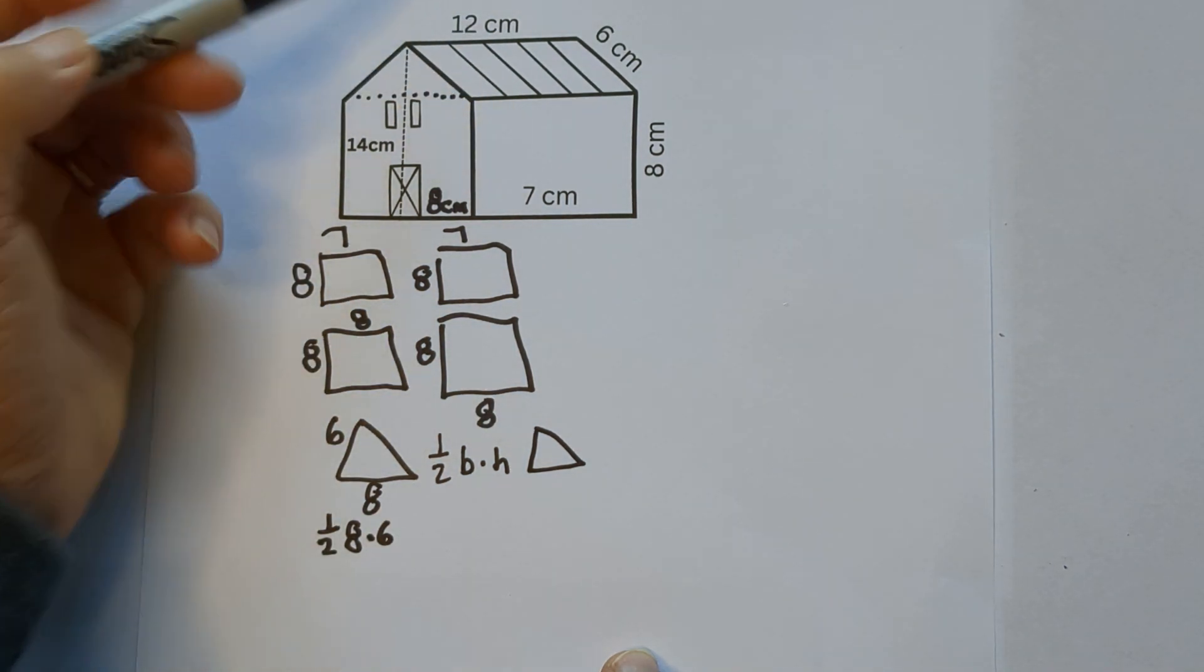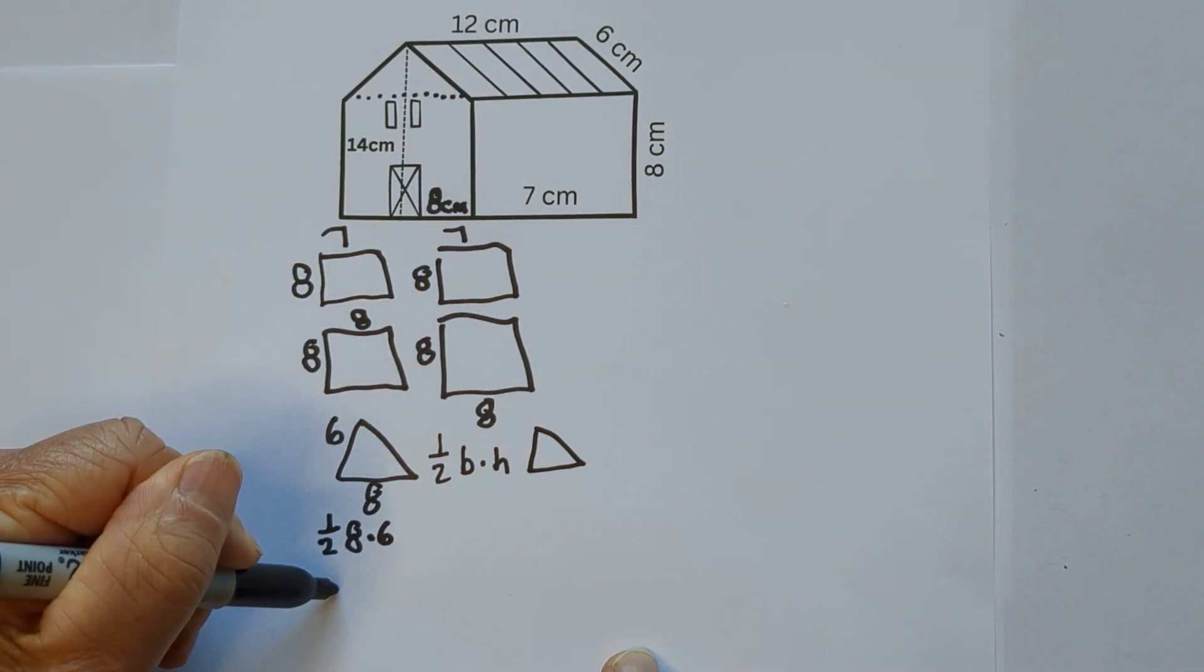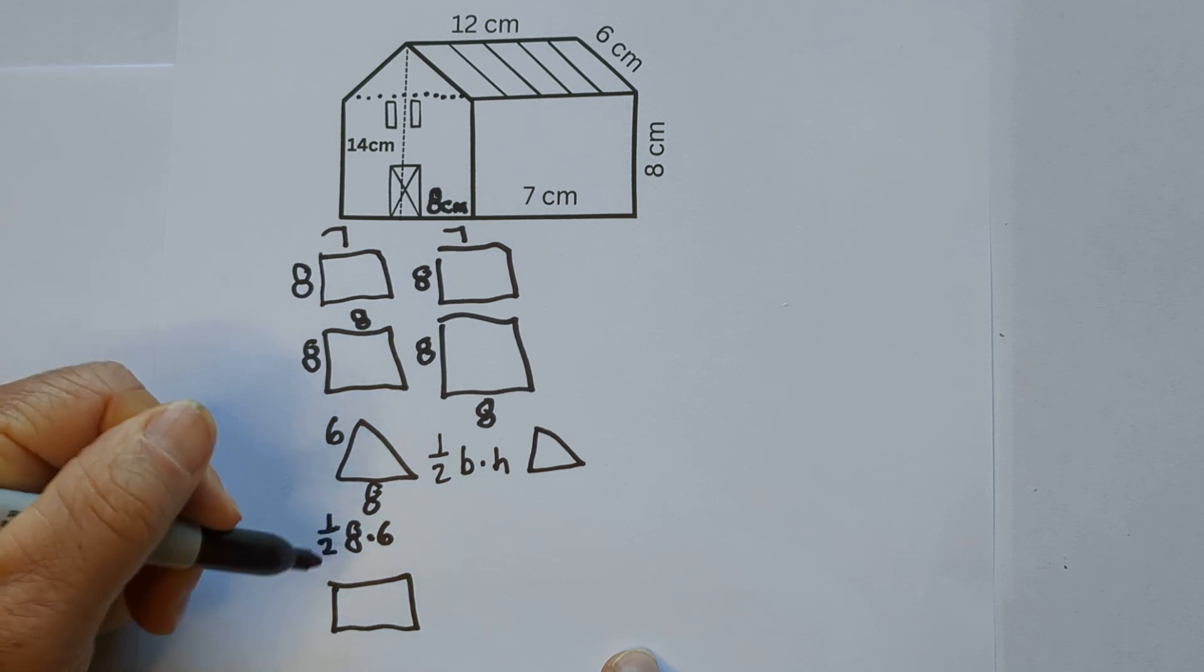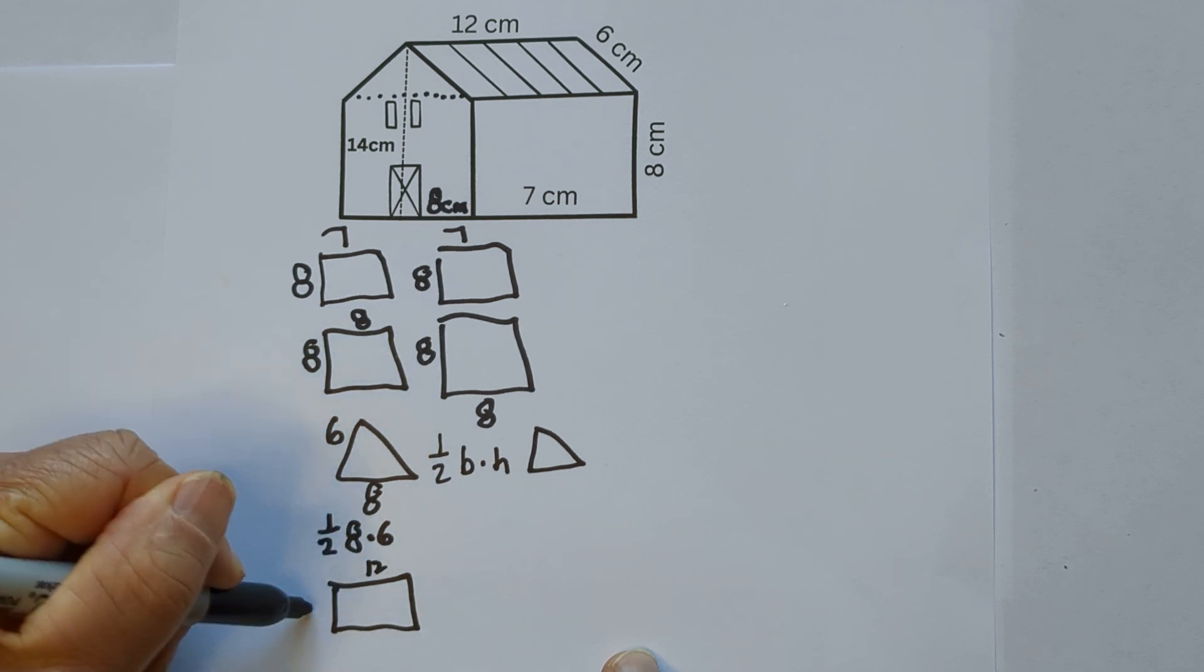And then finally we have the roof, and the roof looks like it's 12 by 6 and we have two of these.